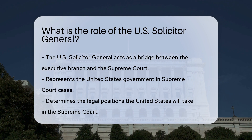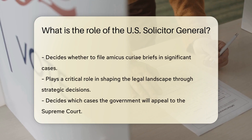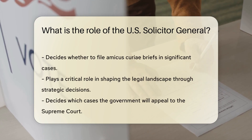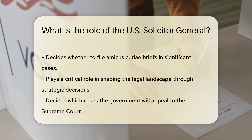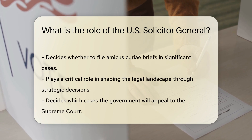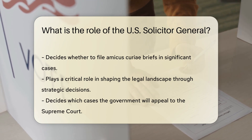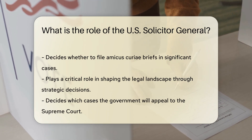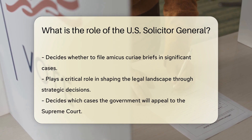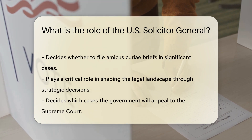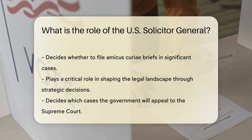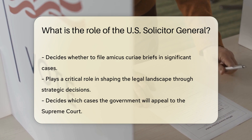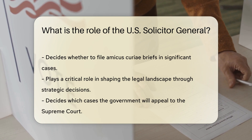One of the key functions of the Solicitor General is to determine the legal positions that the United States will take in the Supreme Court. This involves a careful review of cases and deciding whether to file amicus curiae, or friend of the court, briefs in cases where the federal government is not a direct party, but has a significant interest in the outcome.